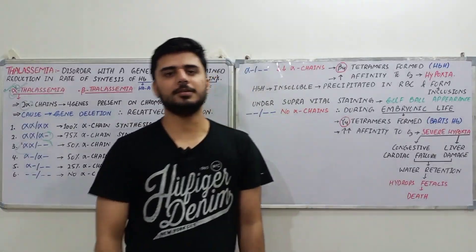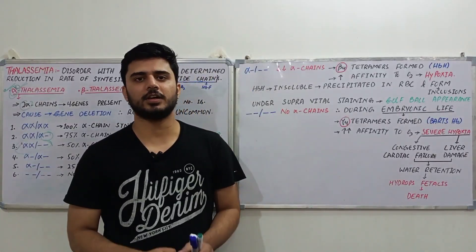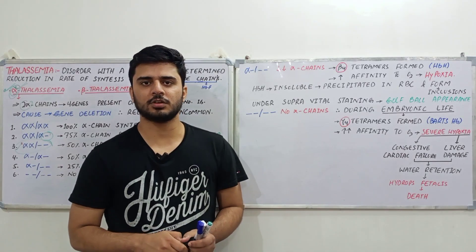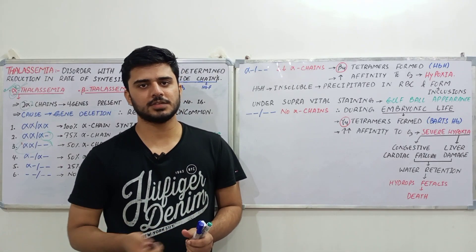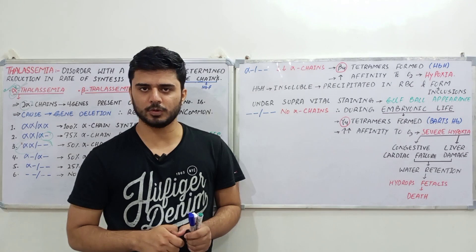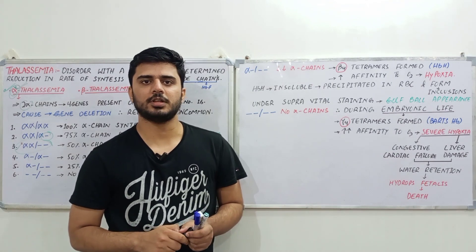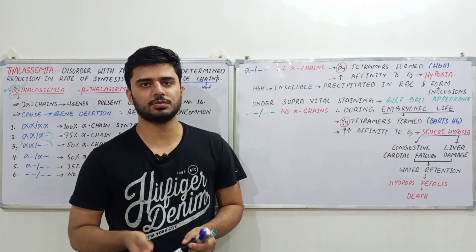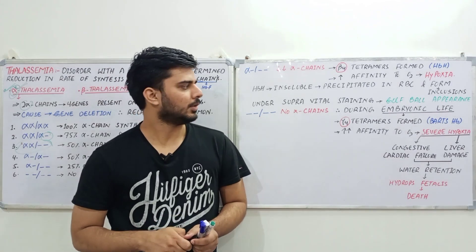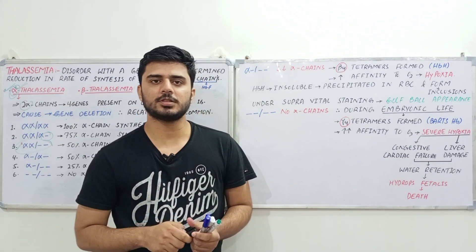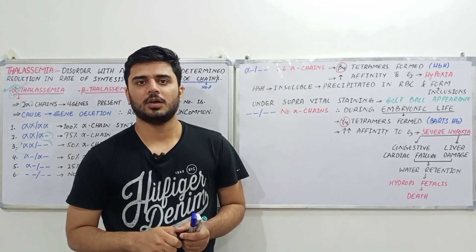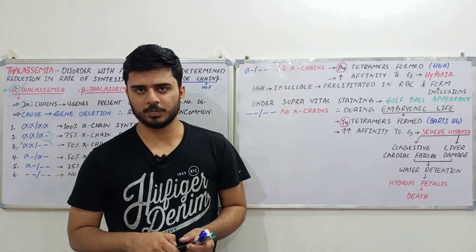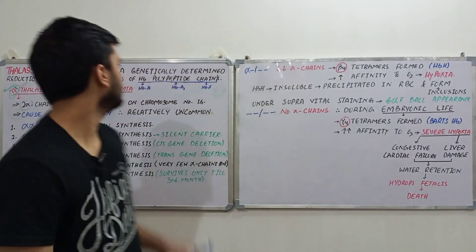Hello and welcome everyone to Synapse Ed. So far in our hematology portion we have discussed about the formation of various blood components as well as the formation of hemoglobin. We also discussed about the destruction of RBC and various clinical conditions related to the destruction of RBC. Now in today's lecture we'll be discussing about the abnormalities related to the rate of synthesis of hemoglobin molecule.